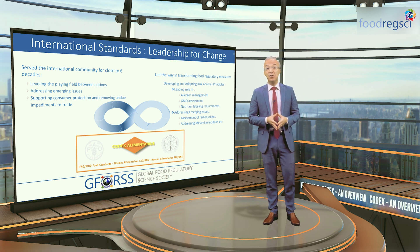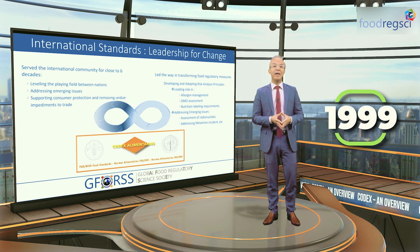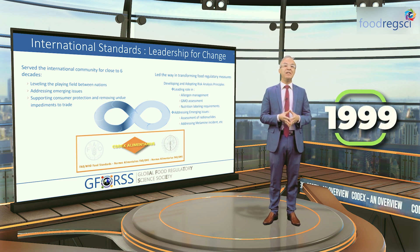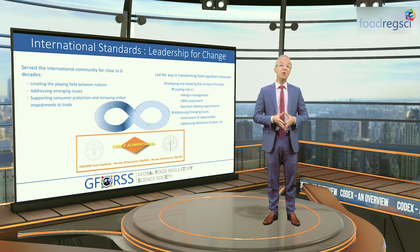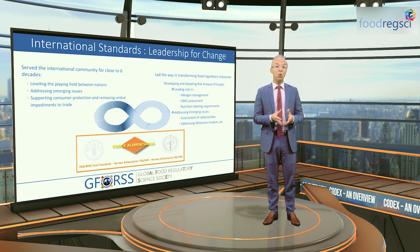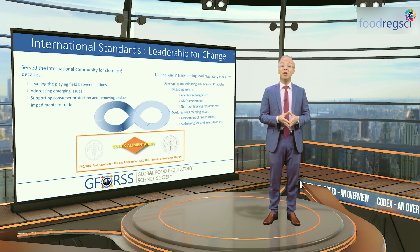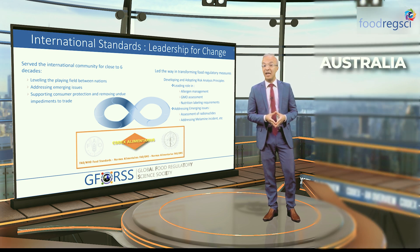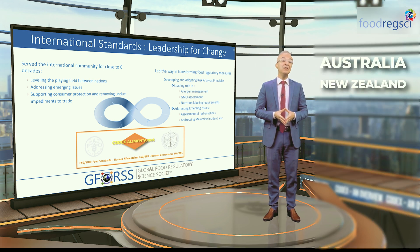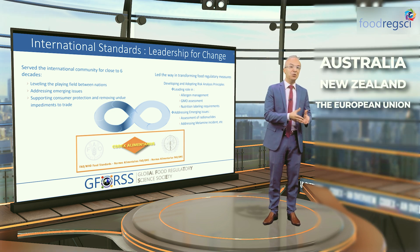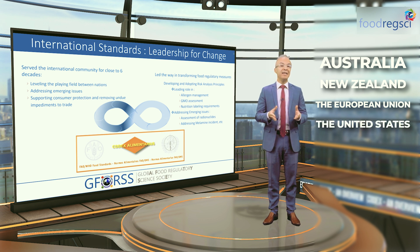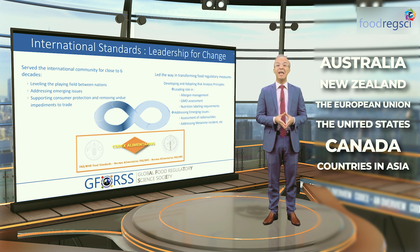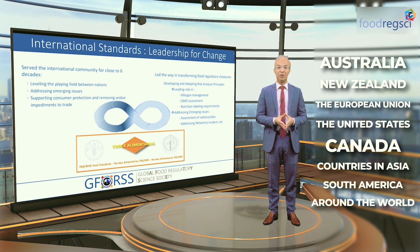Since the adoption of the standard by Codex in 1999, several food regulatory jurisdictions around the world have developed their own food allergen labeling requirements, beginning with Australia and New Zealand in 2001, followed by the European Union, the United States, Canada, and several countries in Asia, South America, and all around the world.